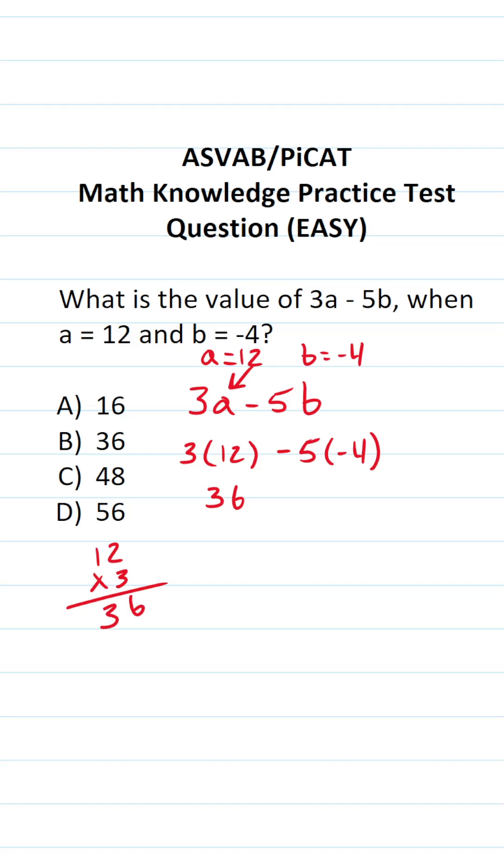Now, the way I like to read this one is negative 5 times negative 4. A negative times a negative is going to be a positive. So negative 5 times negative 4, in other words, is going to be positive 20.